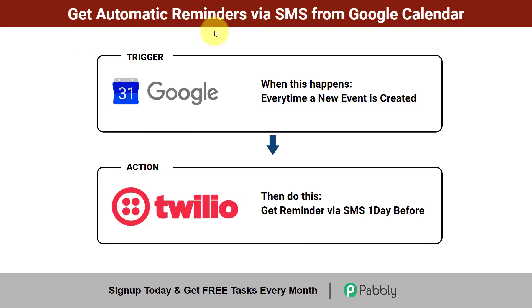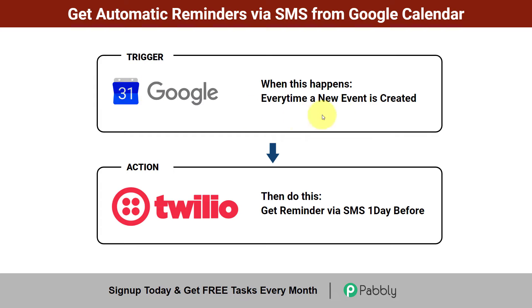In this video, I'll show you how to get automatic reminders via SMS from Google Calendar. Every time you create a new event in your Google Calendar, you can receive reminders of all those events via SMS on your phone one day before the event, and that too automatically. You do not have to keep checking your Google Calendar again and again. Every time an event is created, the reminder will automatically arrive on your phone. For receiving the SMS, I'm going to use Twilio. Come with me and I'll show you the whole process step by step.